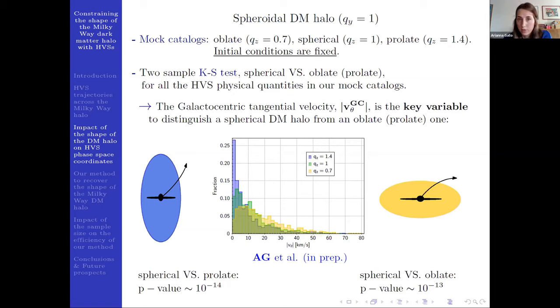Of course, we are in the spheroidal case, so only V_theta will be different from zero while the distribution of V_phi will be null. So the plots show the distribution of V_theta and we can see how the yellow histogram, which is the distribution that we obtain in the oblate scenario, has a median V_theta that is higher with respect to that we obtain in the spherical or in the prolate case, which is the blue histogram.